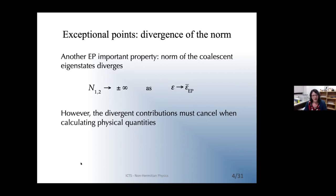Another important property of exceptional points is that the norm of the coalescing eigenstates diverges at the EP. A key point is that the divergence will be of opposite magnitude for the two states, so when you calculate physical quantities, the diverging contributions from the different states will actually cancel out.